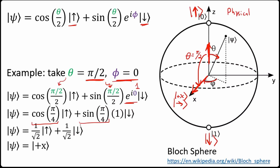This confirms that a physical rotation by theta = π/2 corresponds to a rotation of π/4 in spinor space — that's the angle-halving relationship in action.